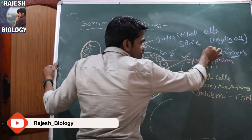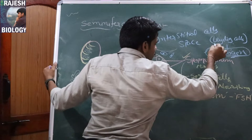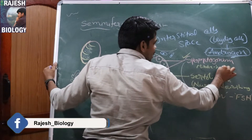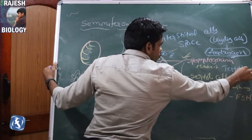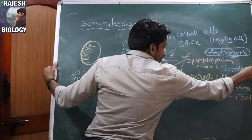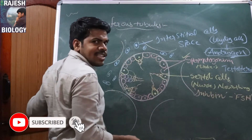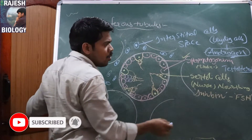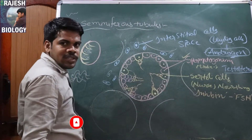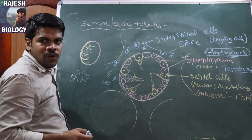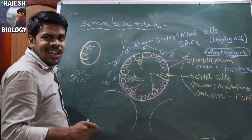The chief androgen, which is very famous, is testosterone. Testosterone is a steroidal hormone released from the testes. Testosterone is the chief androgen that creates the male secondary sexual characters.